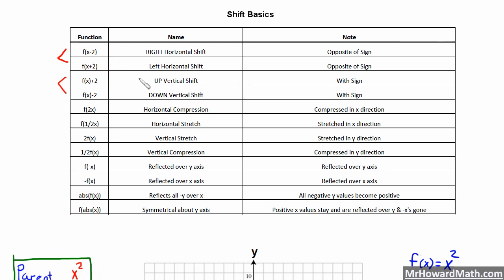Now for our vertical shifts, this one goes with the sign. So this one makes initially a little more sense intuitively. With a plus 2 we'll have an up vertical shift. With a minus 2 we will have a down vertical shift. And you notice that it is outside the parentheses with x. Horizontal shift: opposite of the sign, in parentheses. Vertical shift: outside the parentheses with x, and it goes with the sign.